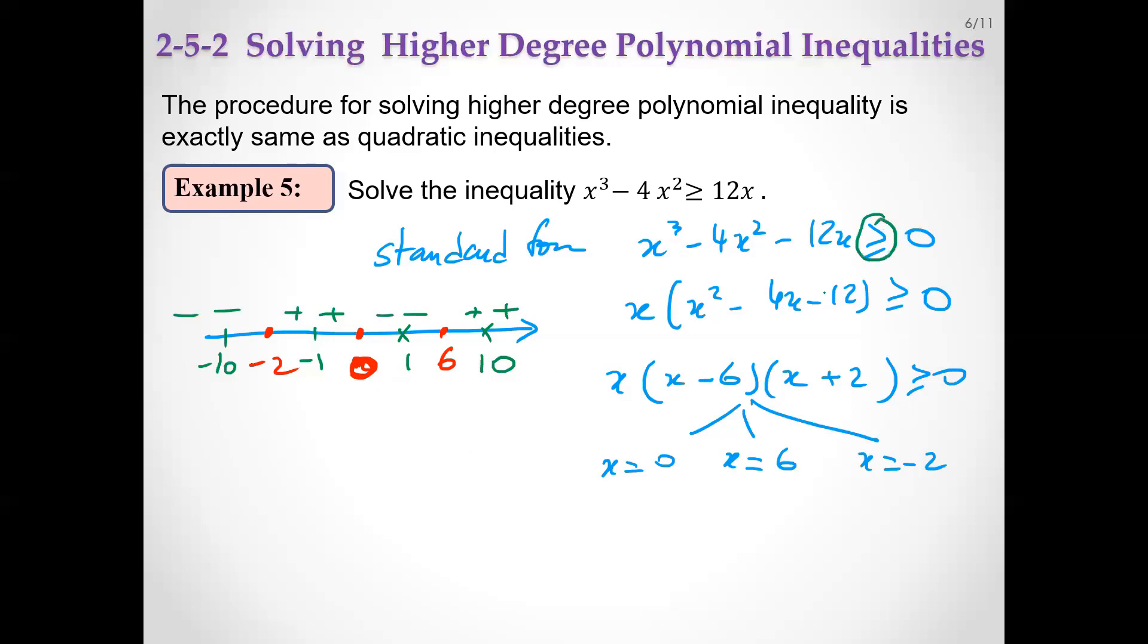Here we want it non-negative or equal, so the solution set is minus 2 to 0 closed, this piece, and this piece. Union, six to infinity.